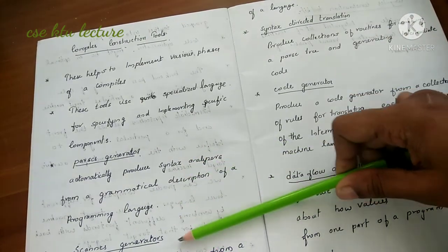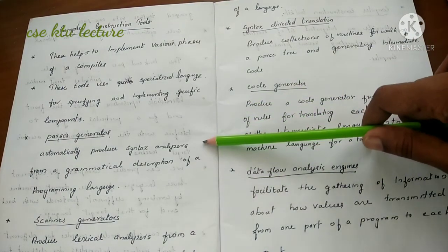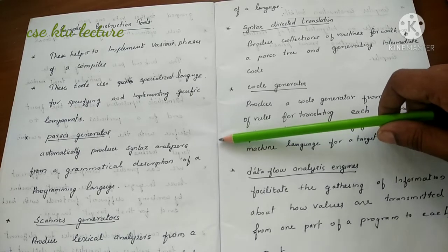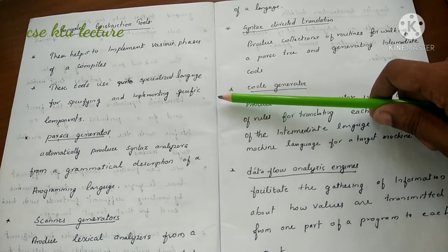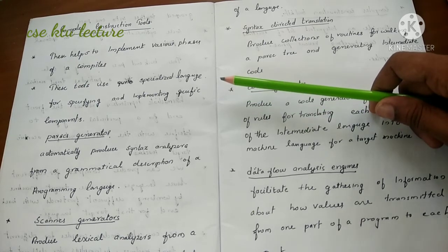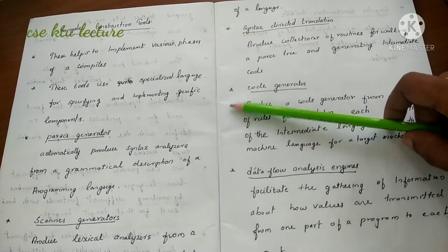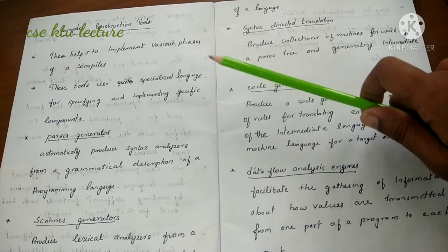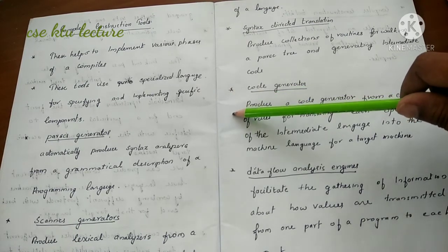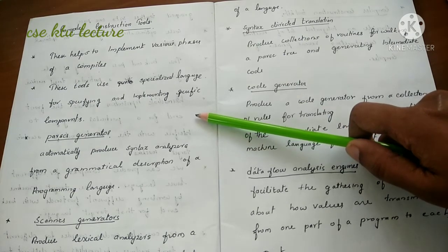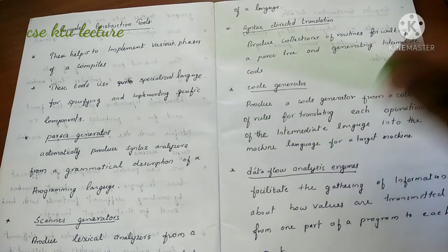So the construction tools are: Parser Generator, Scanner Generator, Syntax-Directed Translator, Code Generator, and Data Flow Analysis — each corresponding to different compiler phases. These tools automatically generate programs rather than manually generating them, which would not be feasible. This helps construct the compiler phases automatically.